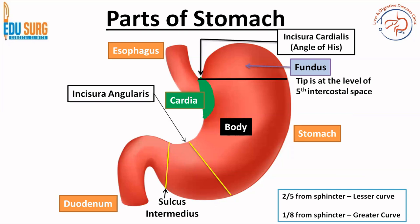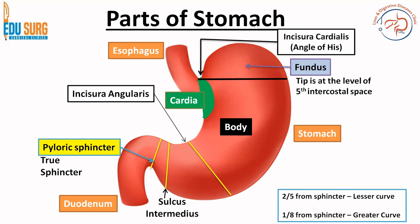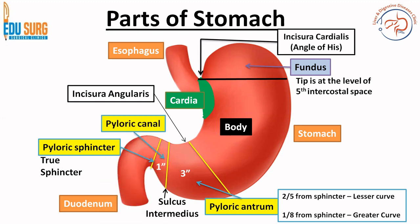There is also another distinct area in the stomach, not clearly visible when you are doing surgeries, which is the sulcus intermedius. But if you can identify this area anatomically, the pyloric sphincter lies beyond the sulcus intermedius. The pyloric sphincter is a true sphincter. To identify it, you have the pre-pyloric vein of Mayo which serves as a landmark. The pyloric antrum is in between these two lines and is roughly 3 inches in size, and you have a pyloric canal which in adults is roughly 1 inch in size.